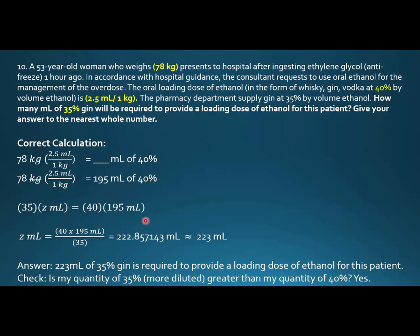And then we see that we take our 35 and we bring it over here, we divide both sides by 35. So z mLs equals 40 times 195 mLs over 35, and we get 222.857143 mLs, and we round as requested to the nearest whole number, 223 mLs.